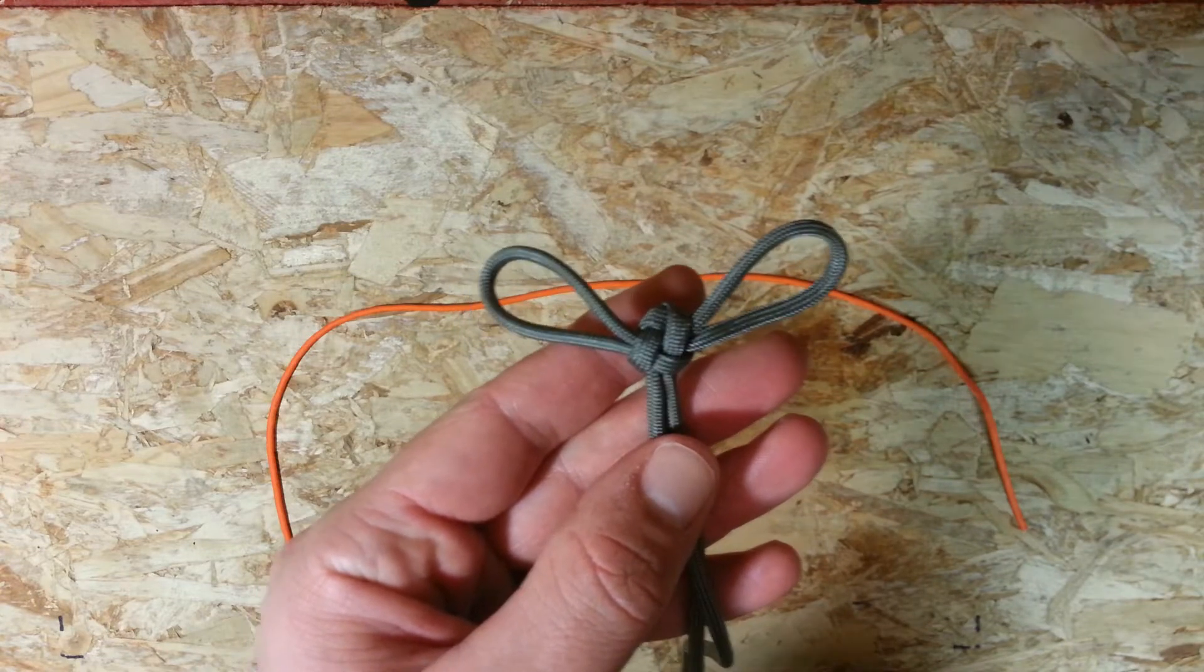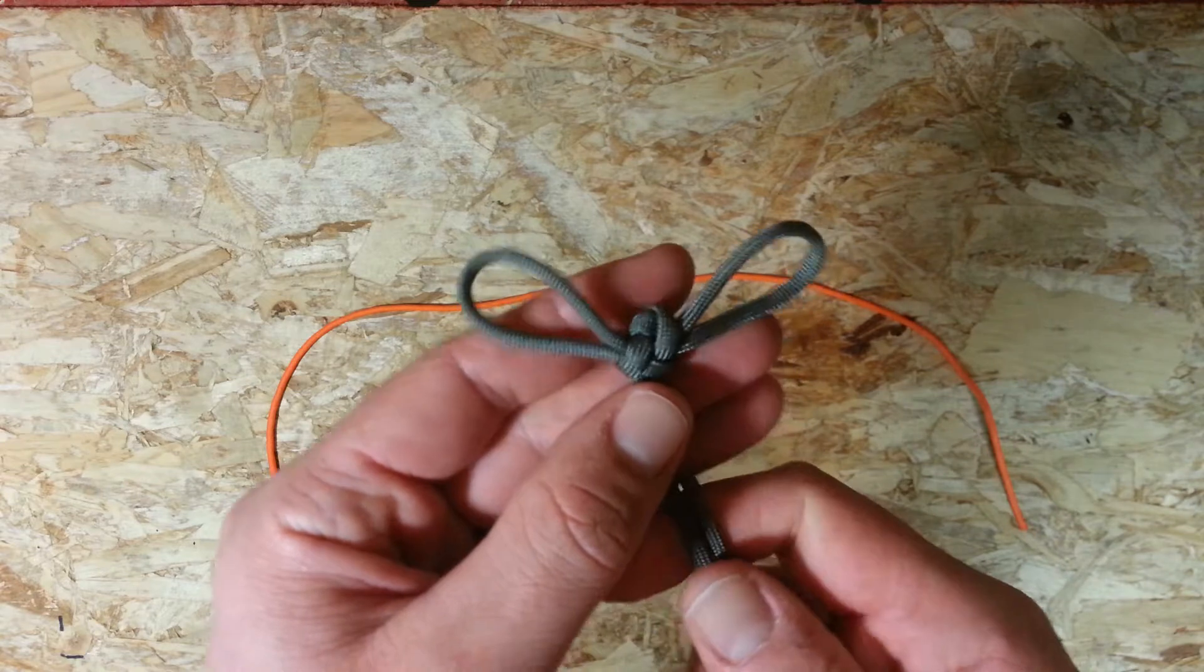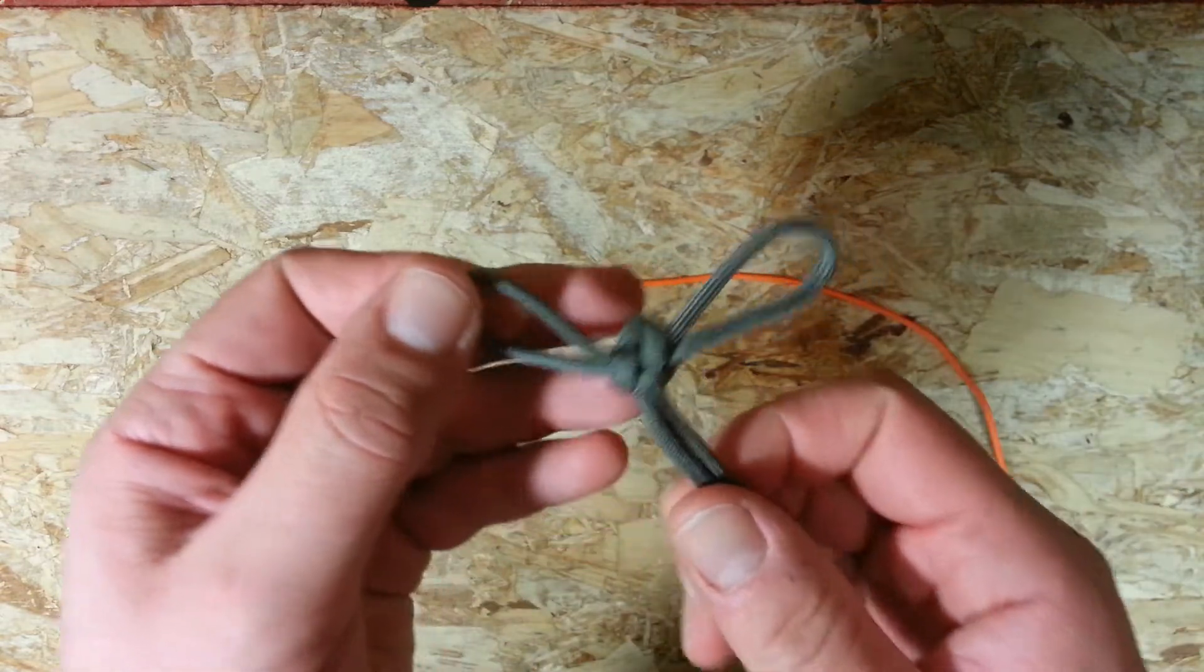Hi guys, Everyday Knife Guy here with another simple paracord tutorial. Today I'm going to show you how to tie this, which is the Japanese bow knot.